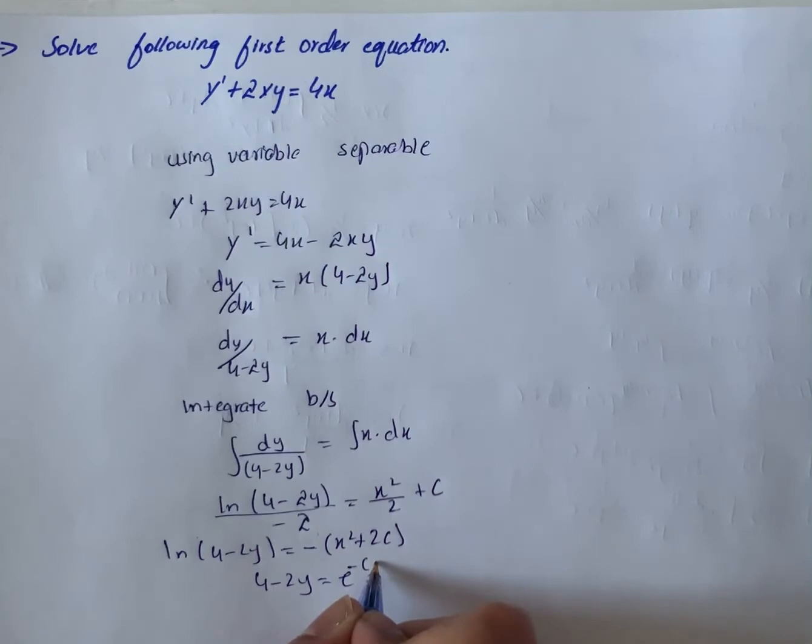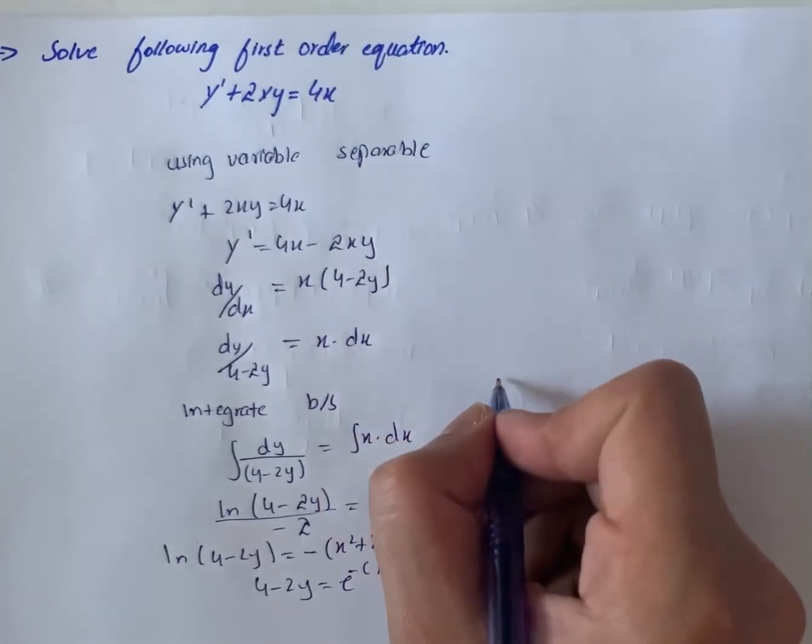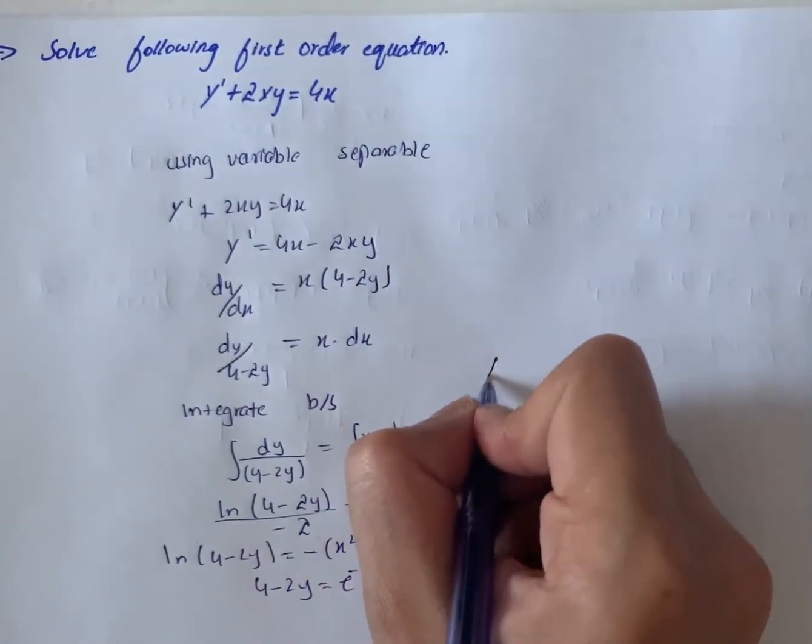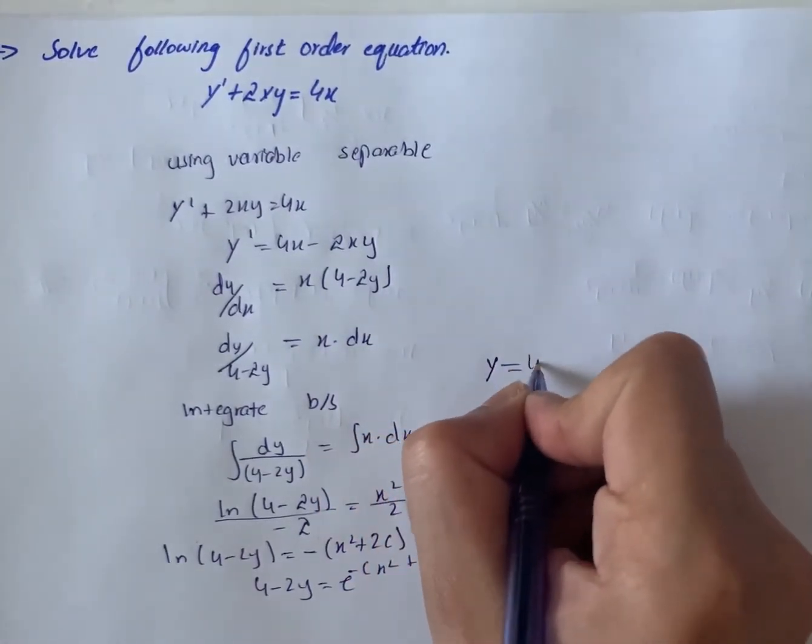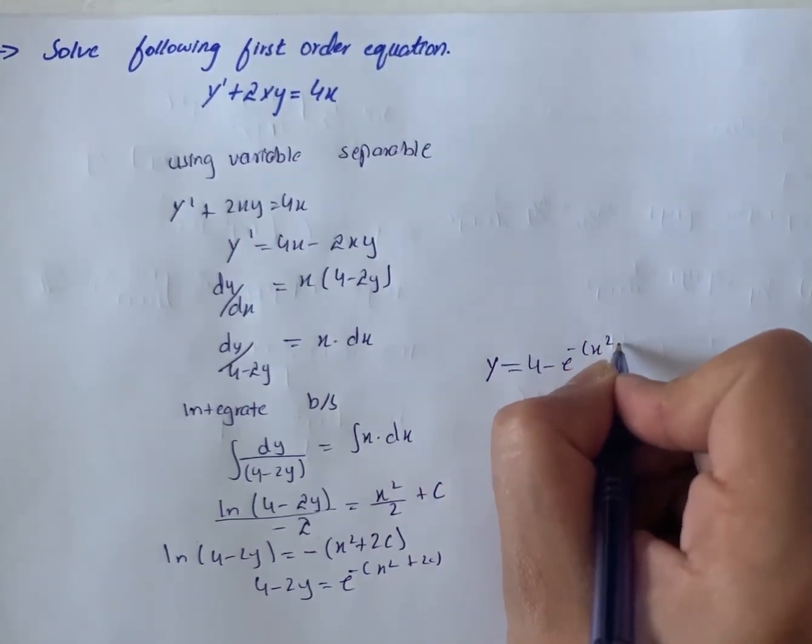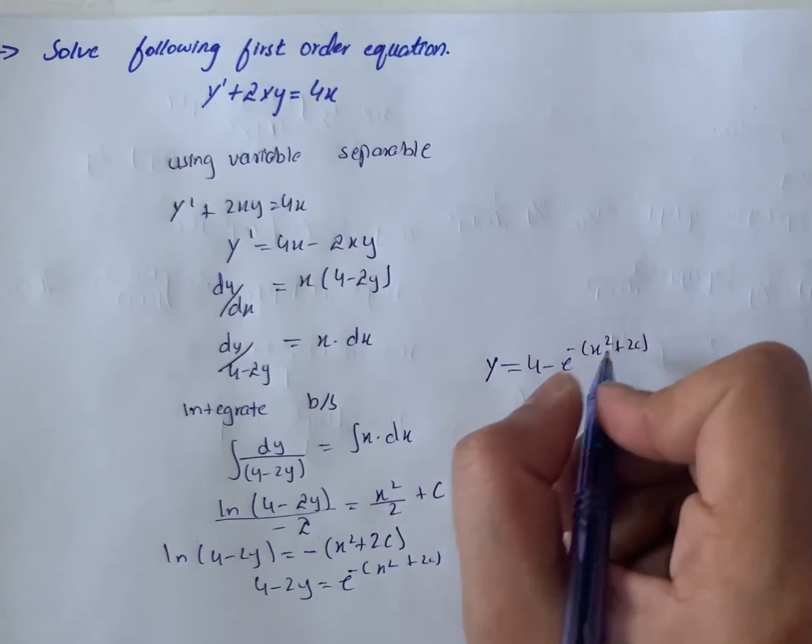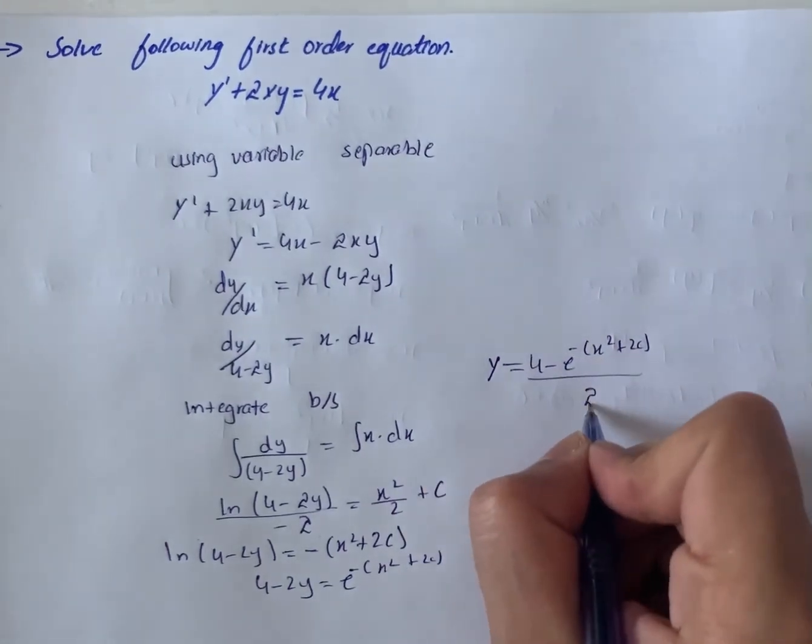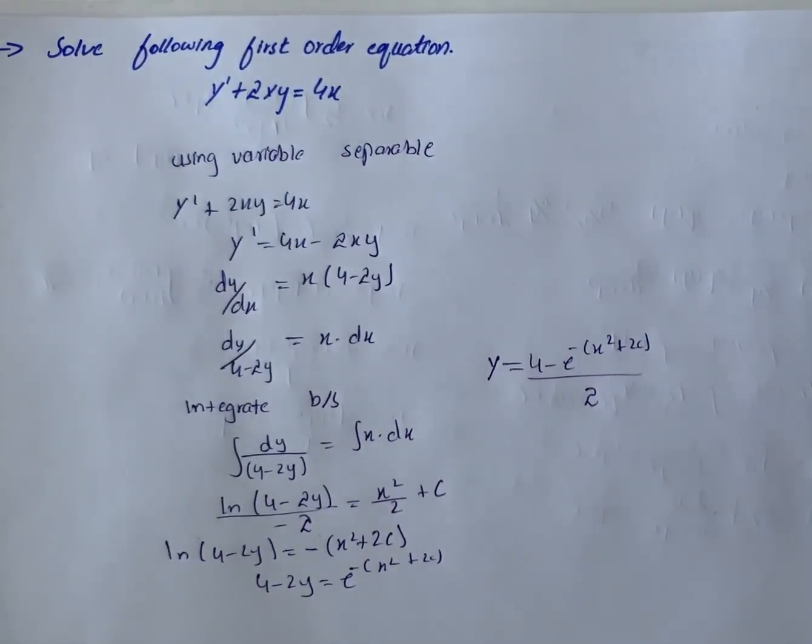So our solution for the given equation would be y = (4 - e^(-x² + 2c))/2. That is our solution for the given differential equation.